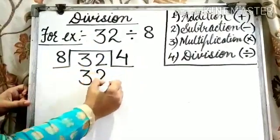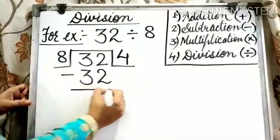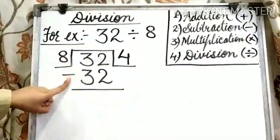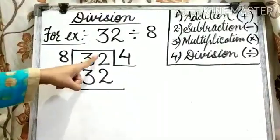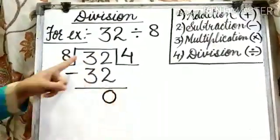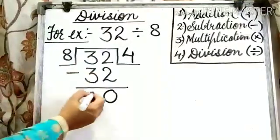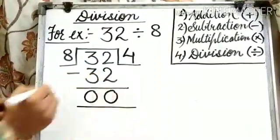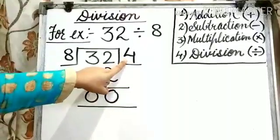And 32 here. Now, what do we need to do? We need to subtract. 2 minus 2 is equal to 0. 3 minus 3 is equal to 0. Here, we get the answer 4.